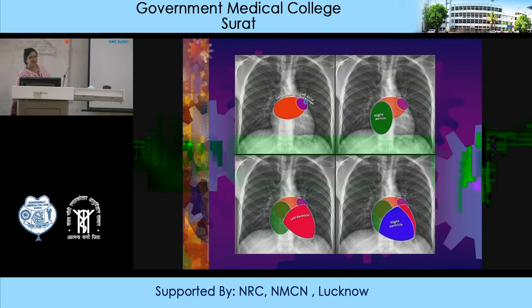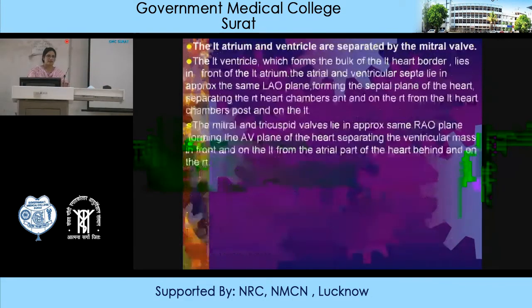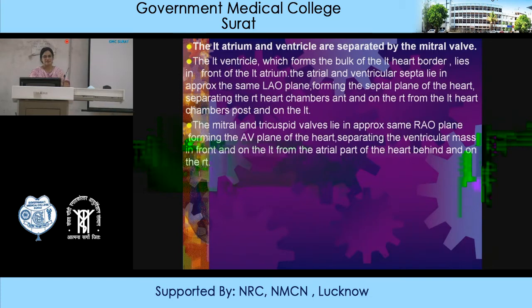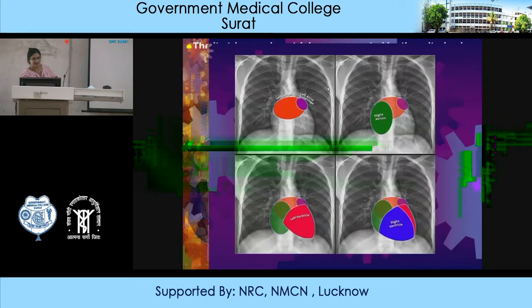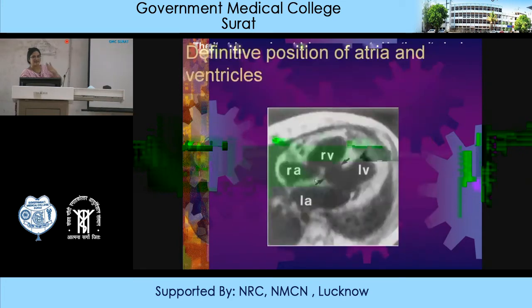The left atrium and the ventricle are separated by the mitral valve. The left ventricle forms the bulk of the left heart border and lies in front of the left atrium. The atrial and ventricular septa lie in approximately the same LAO plane, forming the septal plane of the heart, separating the right heart chambers anteriorly and on the right from the left heart chambers posteriorly and on the left.